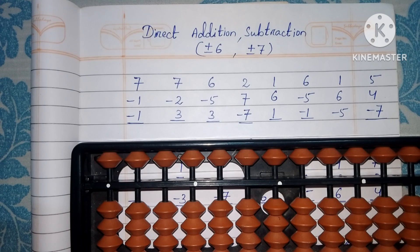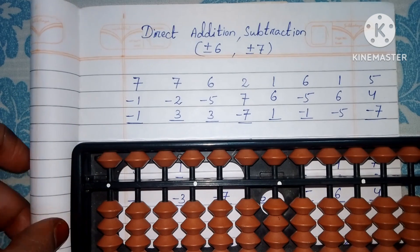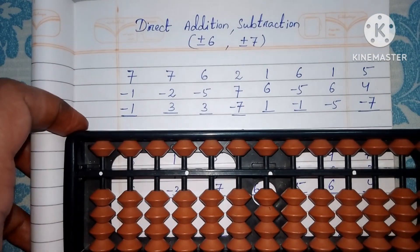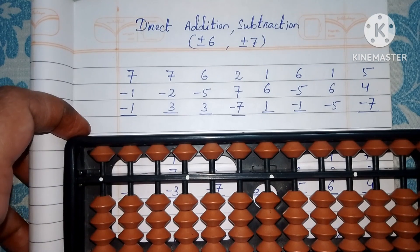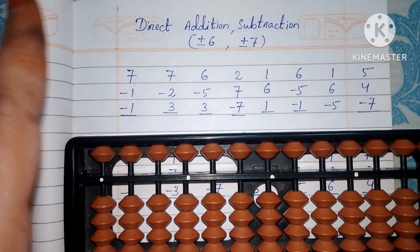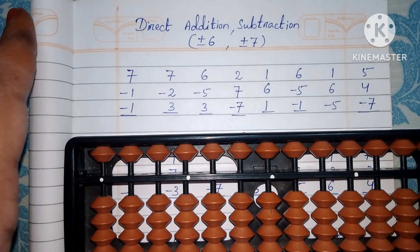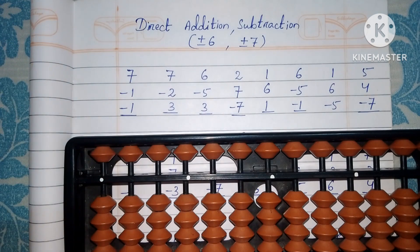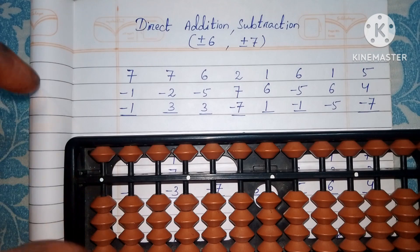The next step is direct addition and subtraction of 6 and 7 on an abacus. If you are watching this video for the first time it may be a little confusing and you may not understand. That's why you have to watch the previous videos first, then come to watch this video — it will be easy for you. How to hold the abacus and which finger to use while doing sums — all those rules I explained in my previous videos.